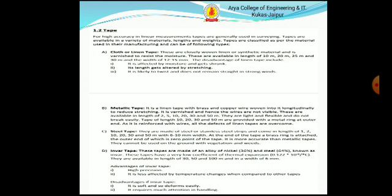Tapes: for high accuracy in linear measurement, tapes are generally used in surveying. Tapes are available in a variety of materials, lengths and weights. Tapes are classified as per the material used in their manufacturing. Cloth or linen tape: these are closely woven linen and synthetic material, varnished to resist moisture. Available in lengths of 10, 20, 25 and 30 meters and width of 12 to 15 mm. The disadvantage of linen tape is it is affected by moisture and gets shrunk, its length gets altered by stretching, it is likely to twist and does not remain straight in strong winds.